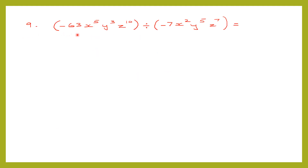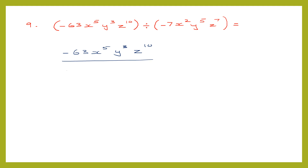Question 9. Here we have a monomial — a single term — divided by another monomial. Though there are many numbers and variables, it is still a single term. We put it in fraction form: minus 63 x to the power of 5, y to the power of 3, and z to the power of 10, divided by minus 7 x squared, y to the power of 5, and z to the power of 7.